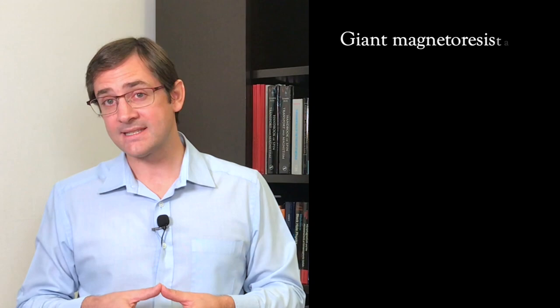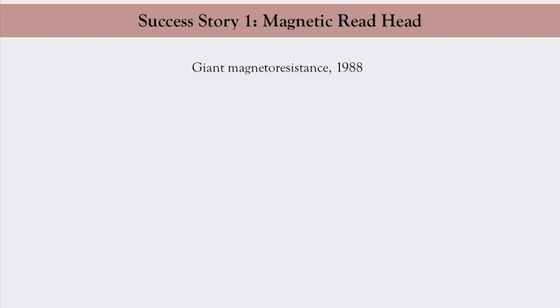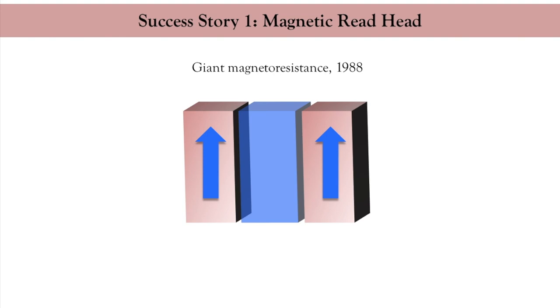I am going to tell you about two success stories. The first concerns the magnetoresistive read heads of magnetic hard drives, a technology based on the discovery of giant magnetoresistance by Peter Grünberg and Albert Fert in 1988. For this discovery, Fert and Grünberg received the 2007 Physics Nobel Prize. To understand giant magnetoresistance, let us consider a device composed of two ferromagnets separated by a spacer — this device is called the spin valve. The magnetization of the two ferromagnets can be set either parallel or anti-parallel to each other. Consider first the situation when the magnetizations are parallel.